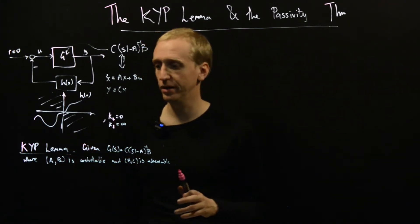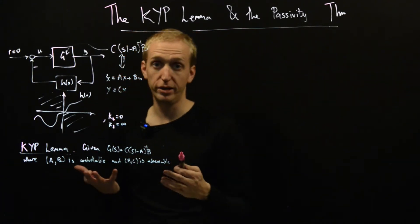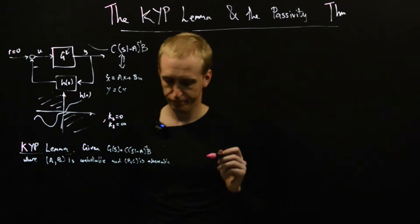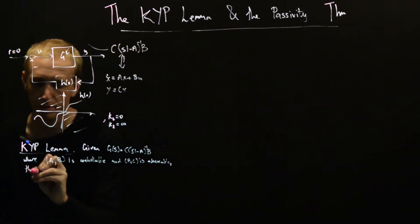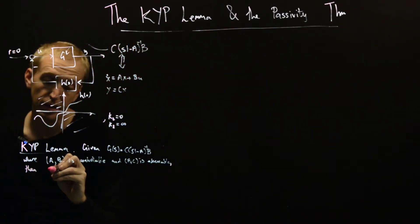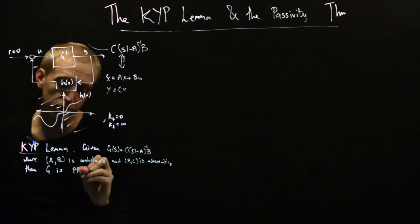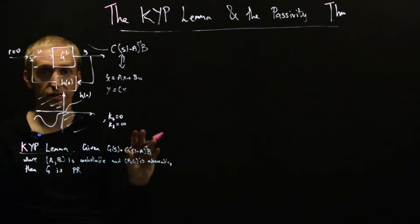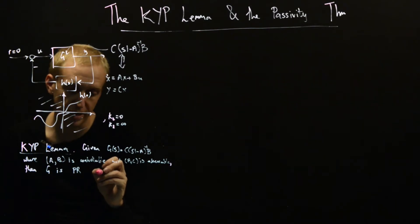Every transfer function has a realization with A, B controllable and A, C observable. It's just realizations are not unique and they can be non-minimal. So we have a realization that is a minimal realization of our transfer function G.